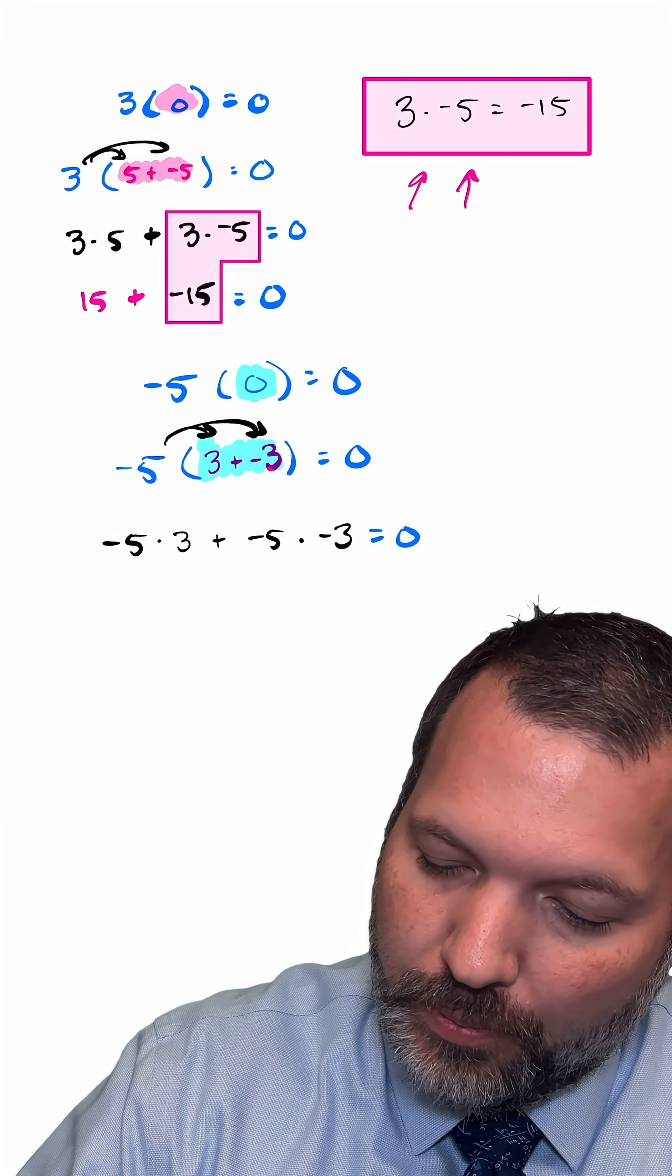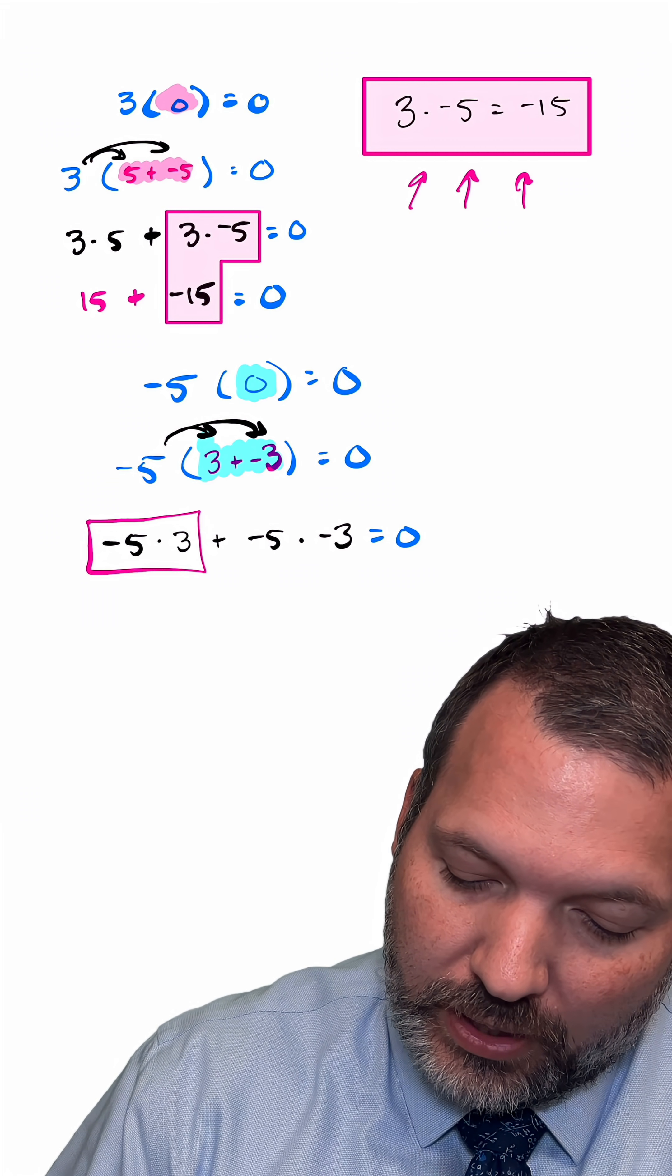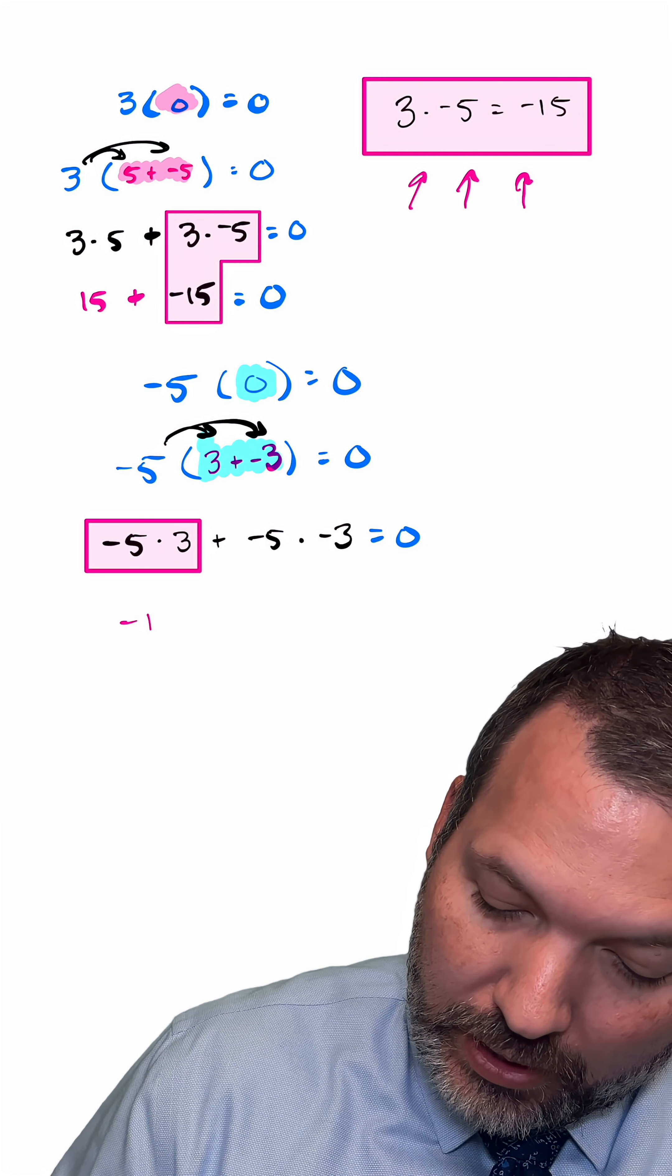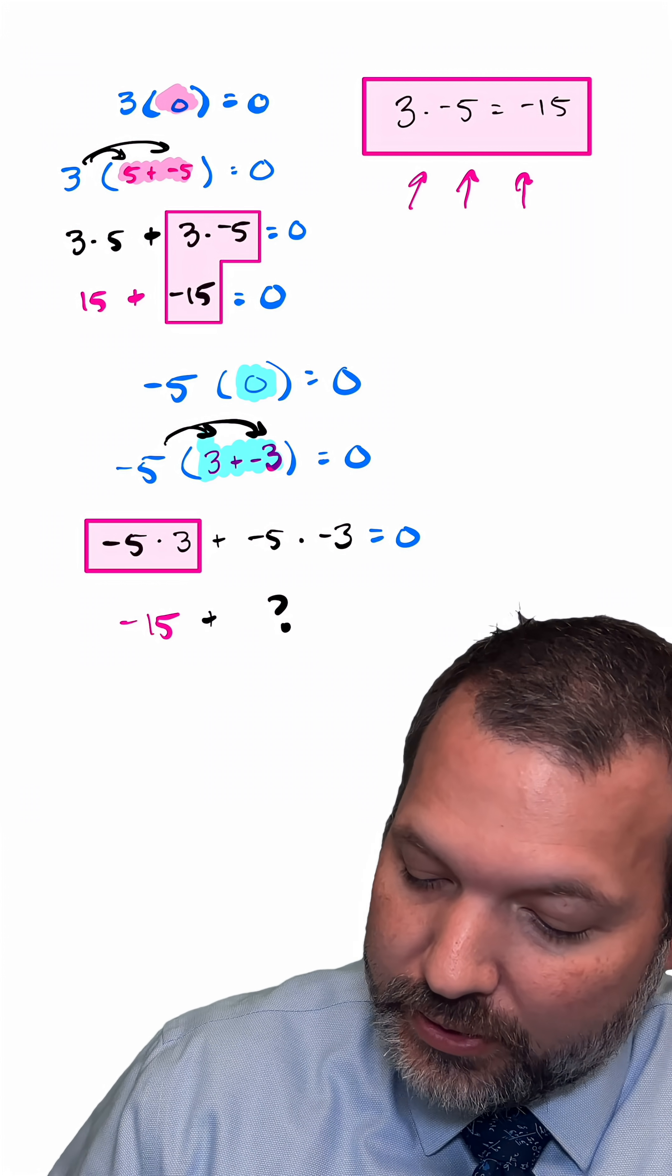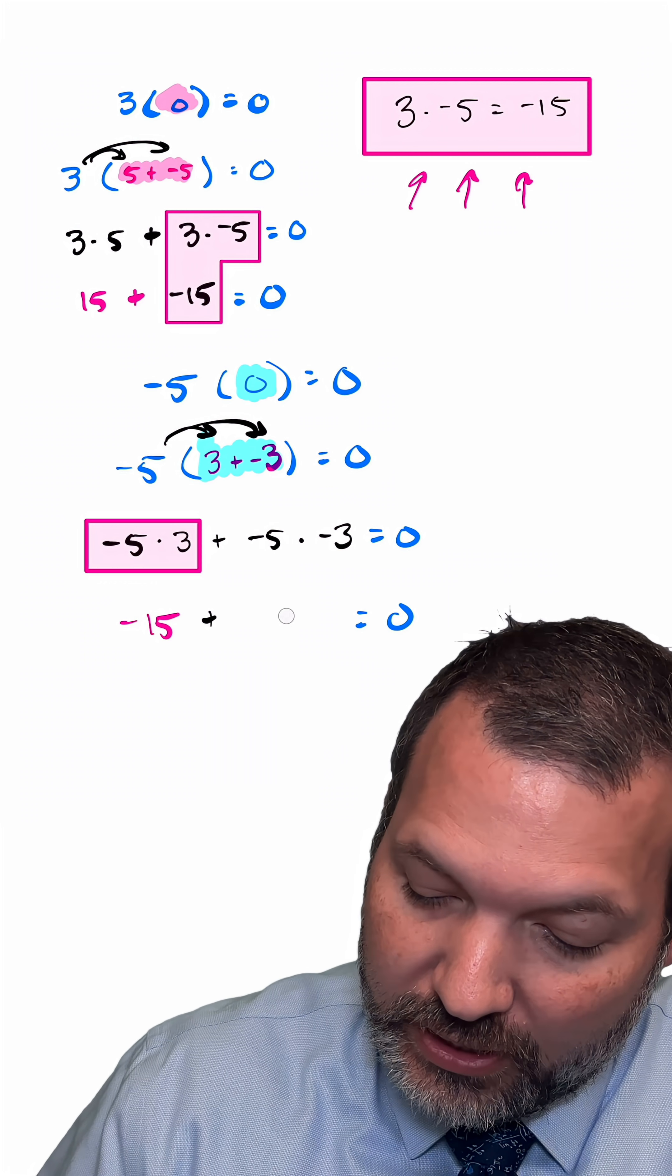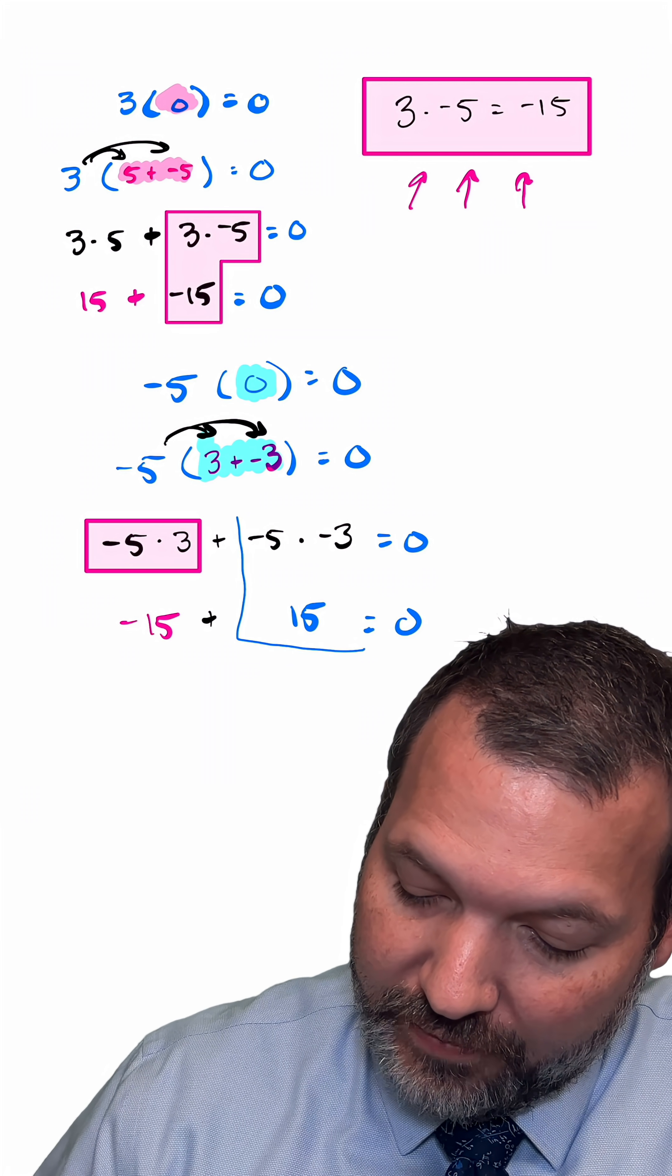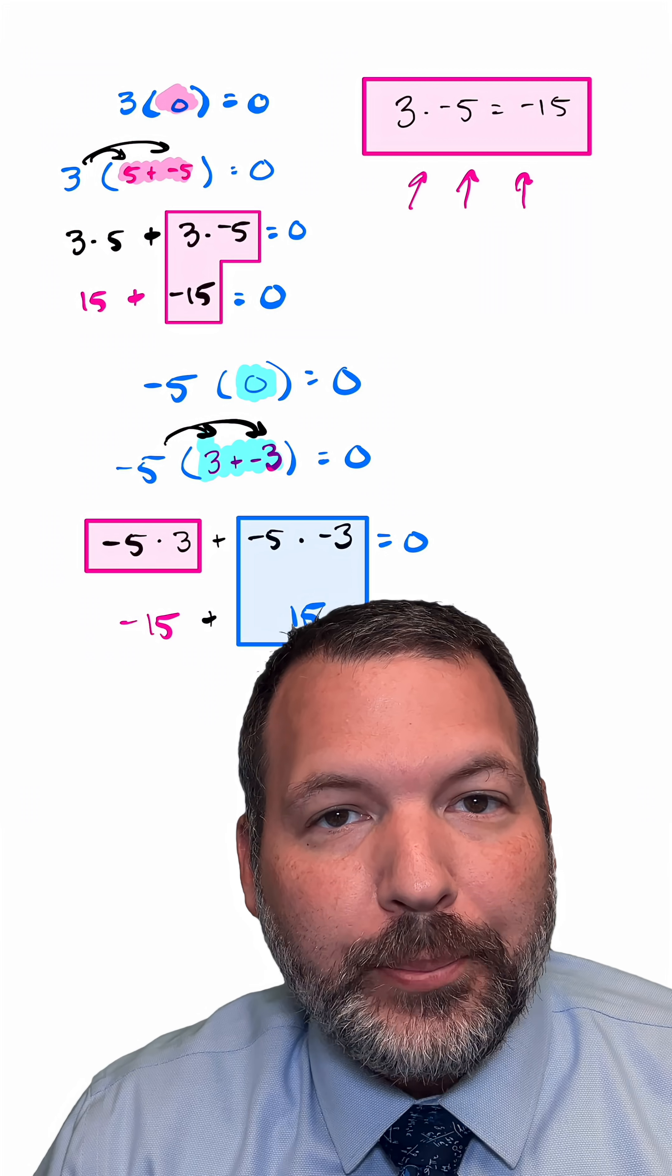Now, we just figured out a moment ago, here's our special box, that negative 5 times 3 is the same thing as negative 15. Multiplication is commutative, so we're allowed to flip that around. And so this must be negative 15 plus something. Let's say we don't know what it is, and this is supposed to be equal to 0. Well, again, what plus a negative 15 is going to make 0? A positive 15. And so we can say now that negative 5 times negative 3 should be equal to positive 15 by the distributive property.